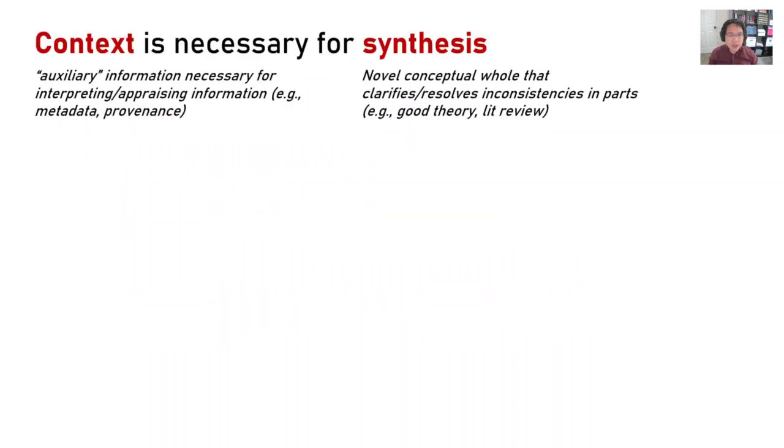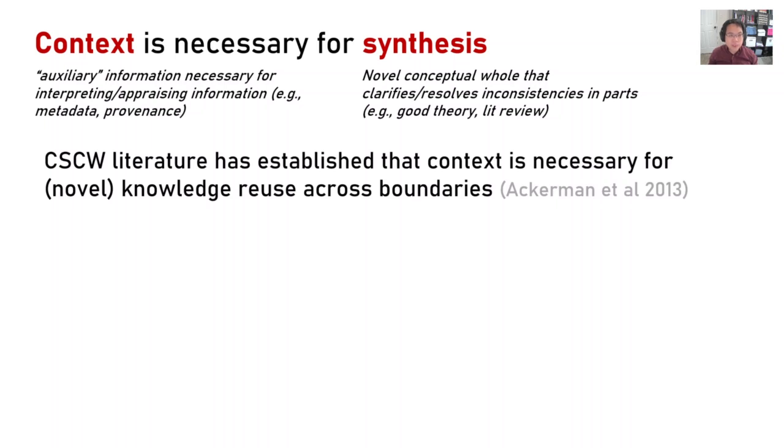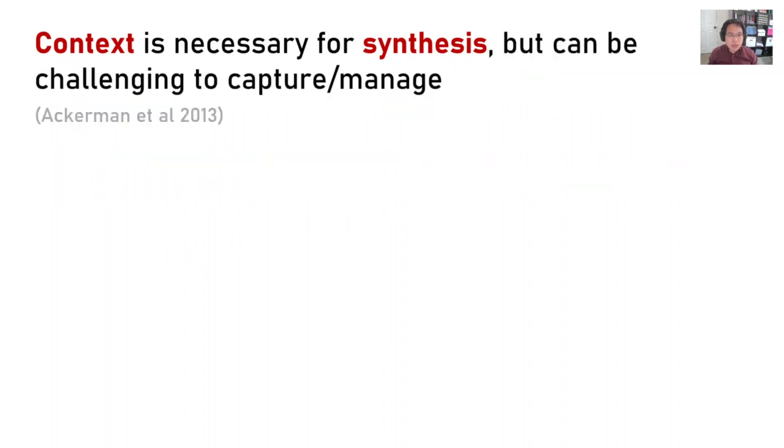This example illustrates how context, auxiliary information that's necessary for interpreting or appraising information, such as metadata and provenance, is necessary for synthesis, which is producing a novel conceptual whole that clarifies or resolves inconsistencies in parts. In general, CSUW literature has established that context is necessary for novel knowledge reuse across boundaries. This same literature has also established that context can be challenging to capture or manage, which can lead to downstream issues.